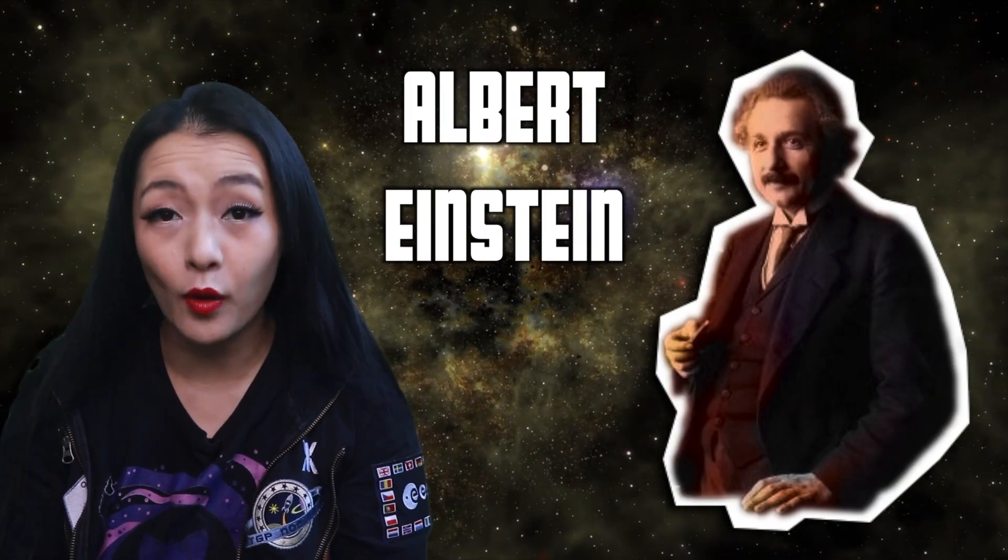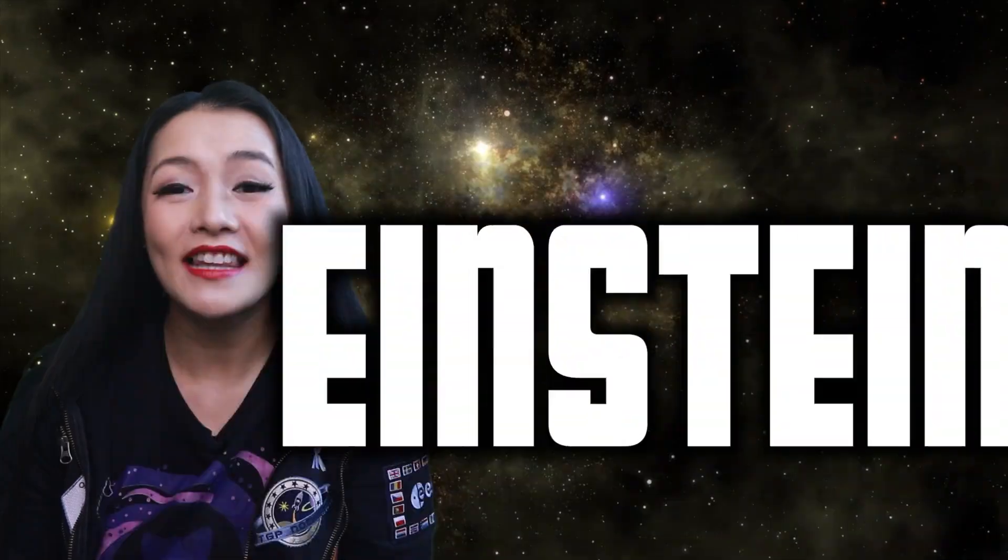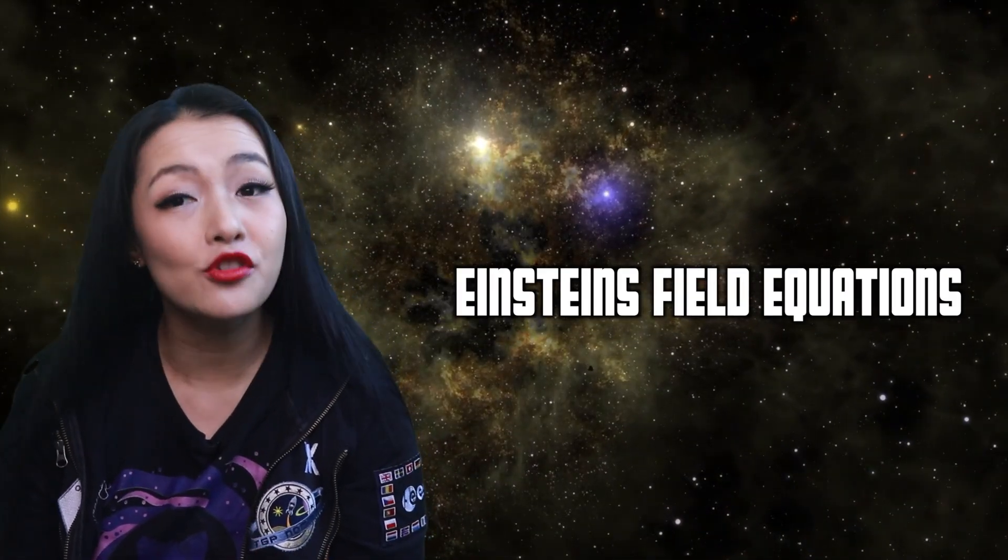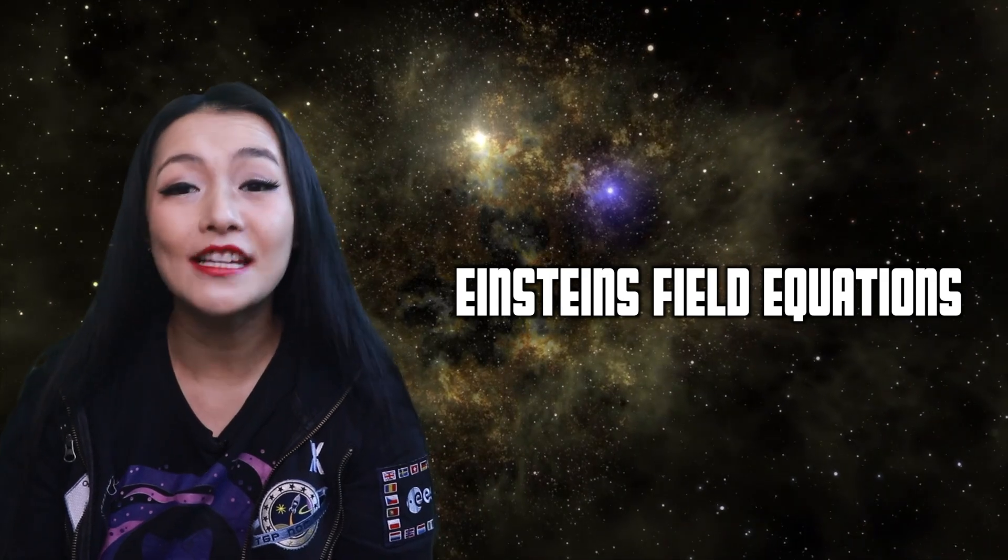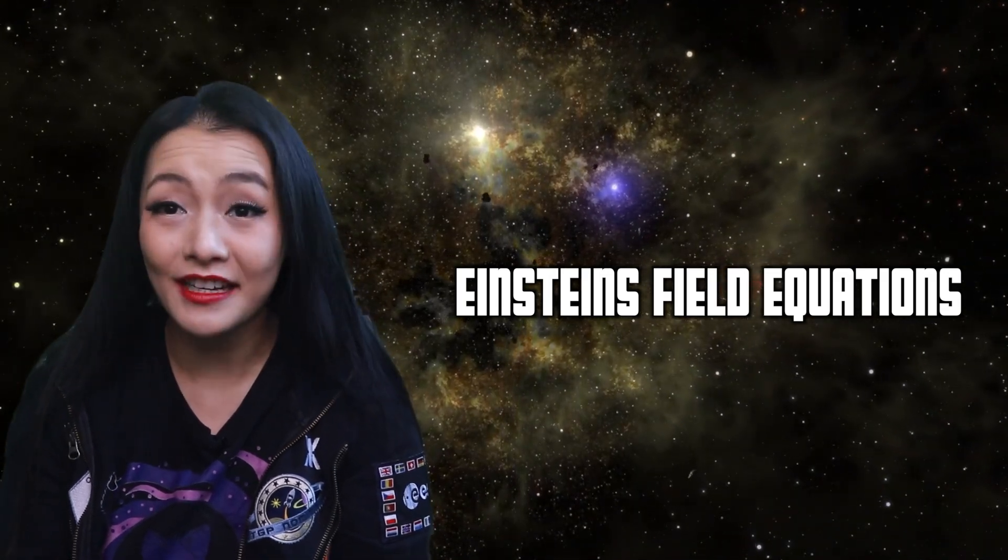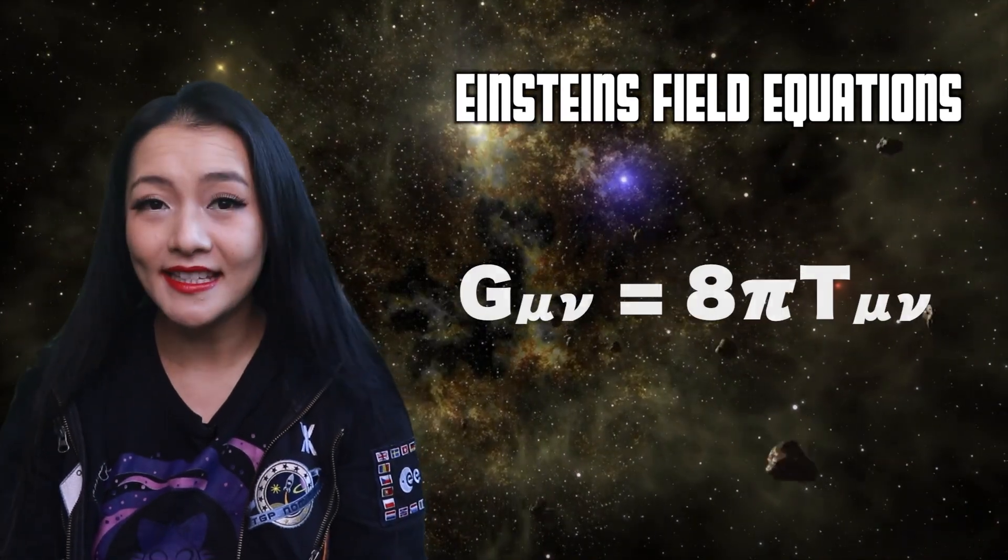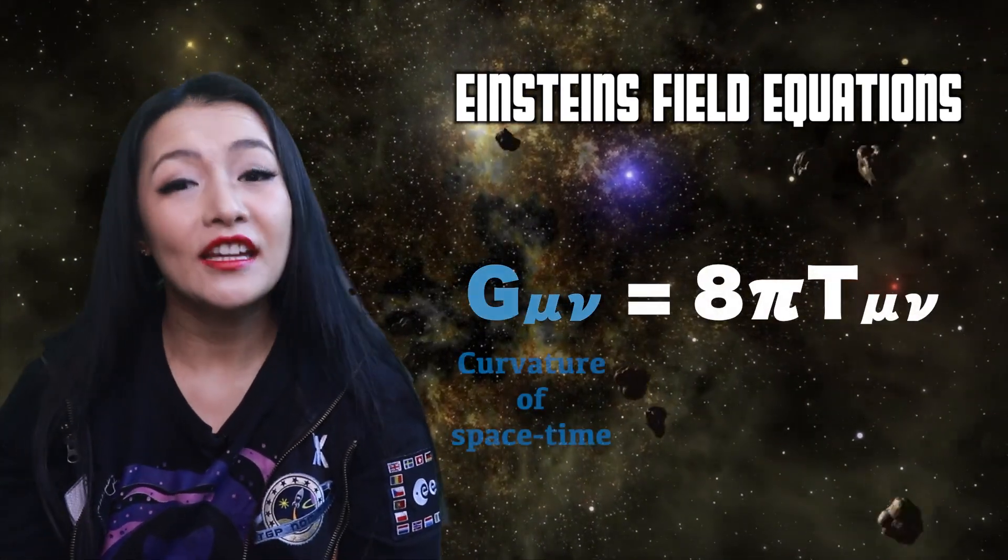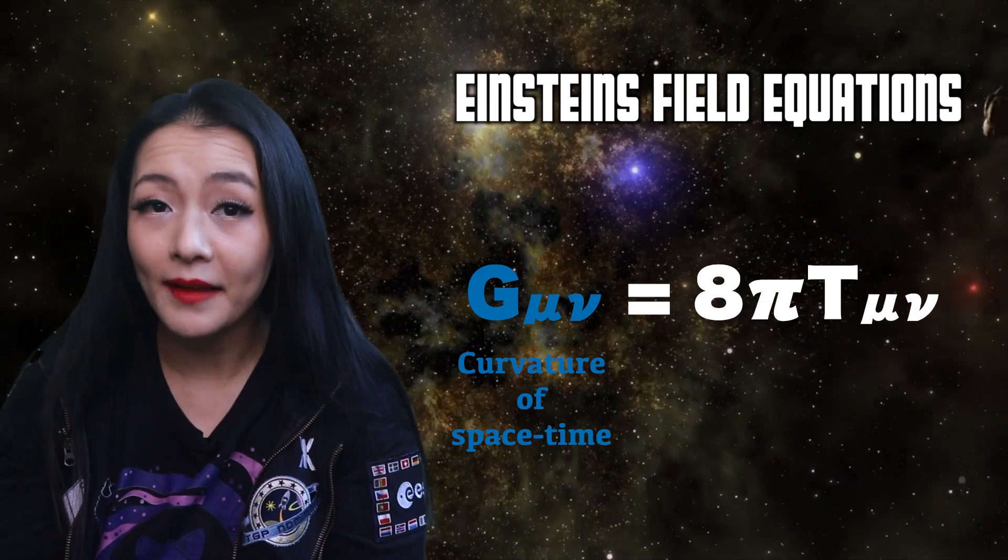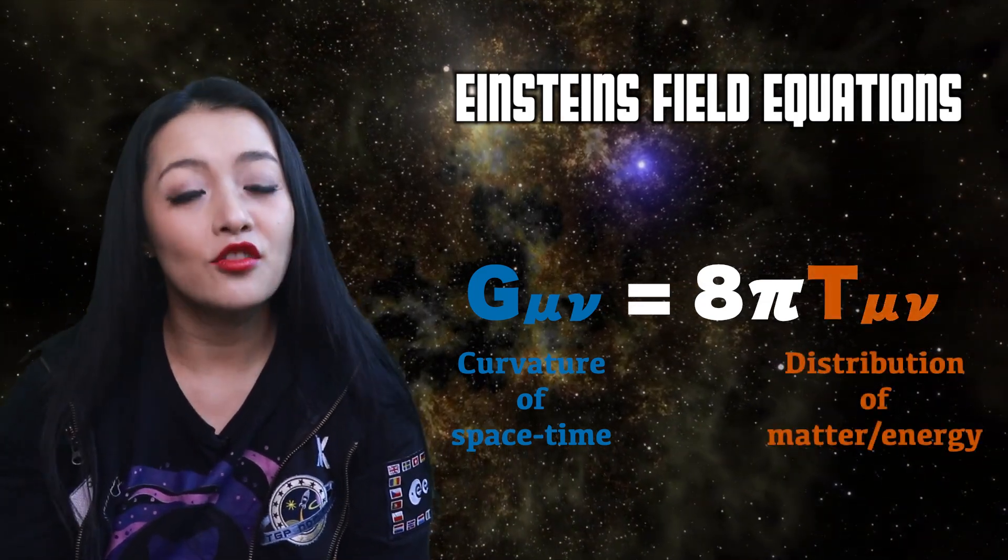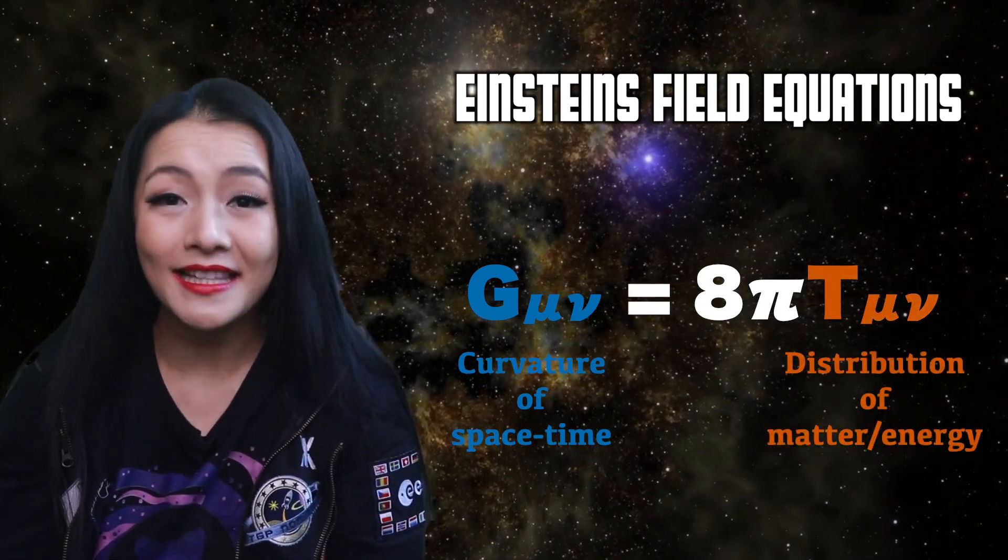Albert Einstein in 1915 published his field equations that describe the relationship between the geometry of space-time and the distribution of matter and energy within it. Most famously, it's written like this, where g_mu_nu encodes the curvature of space-time and T_mu_nu describes the distribution of matter and energy.